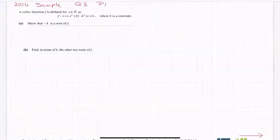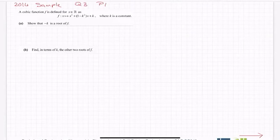This one from the 2014 sample paper, it was question three, is probably the hardest cubic equation that I've seen on the paper, probably because it's a bit abstract in that it's in terms of k. A cubic function f is defined for x is an element of R as f of x maps onto x cubed plus 1 minus k squared x plus k, where k is a constant.